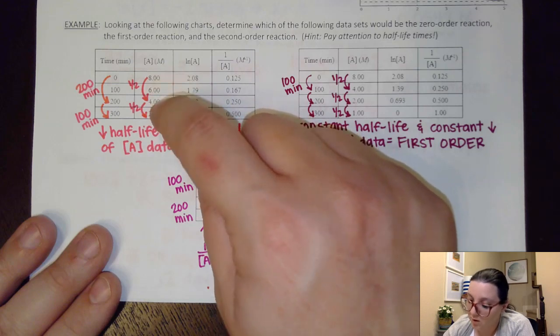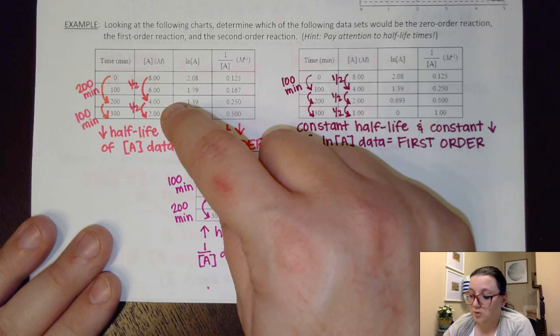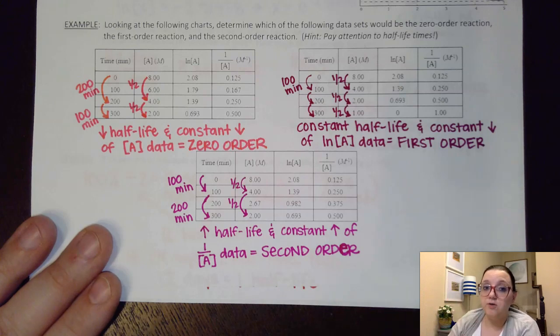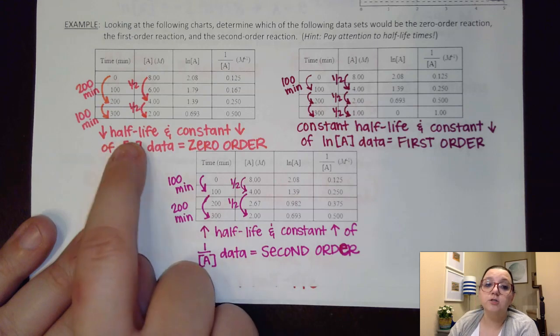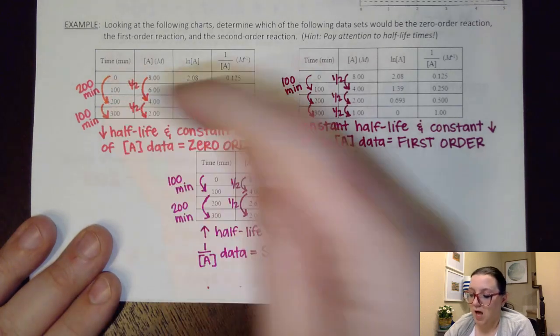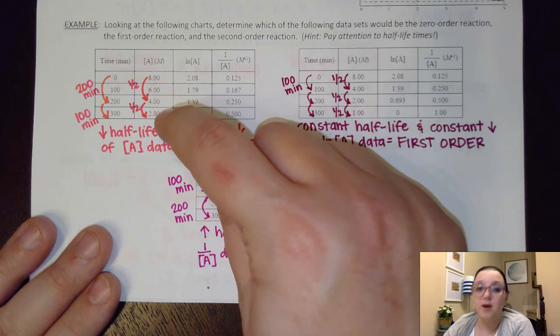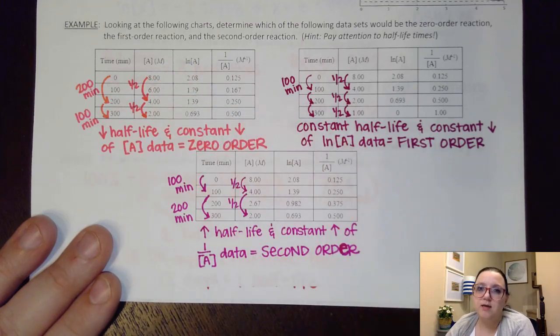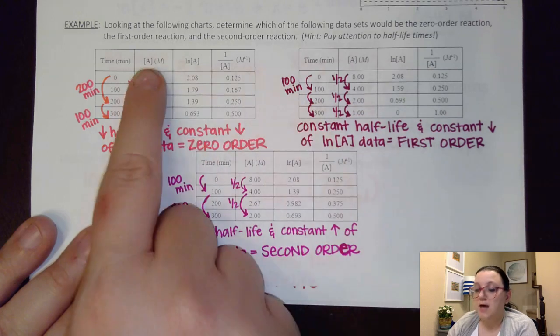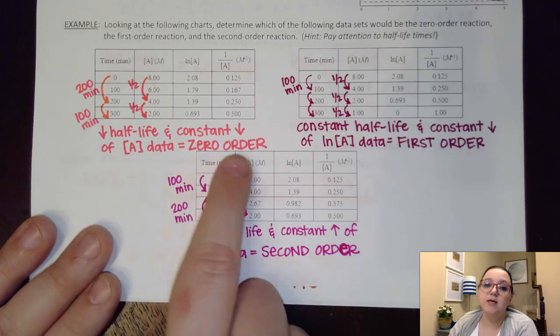Well, if I want to half 4 again, that bumps me down to 2. But to go from 4 to 2 only took 100 minutes. So look, I went from halving taking 200 minutes to halving only taking 100 minutes, which means I had a decreasing half-life time. Something else I want to point out is with these regular intervals of time, notice that I was getting very set intervals of change of A. Like it's going down by 2 molar every single time, which means that if I'm having a constant decrease, that this data must be linear. And so what that means is that a concentration of A versus time graph would be linear. And so we hopefully can recognize that as being zero-order data.